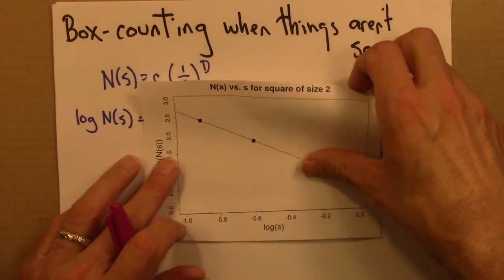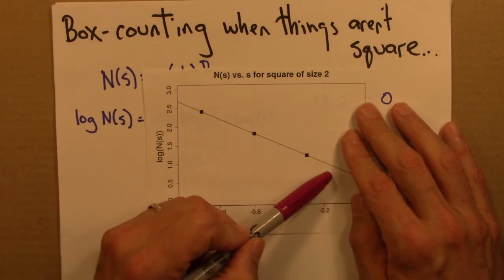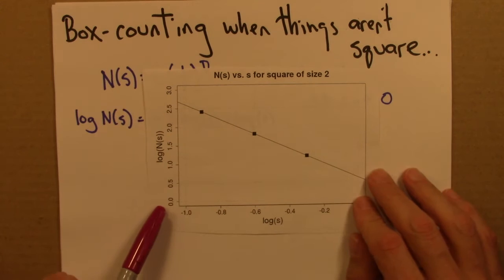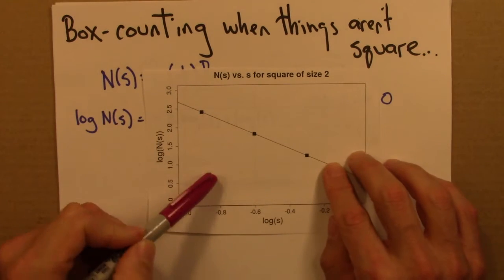So we did that for a square, and sure enough, we got a beautifully straight line. We could have plotted many more points, it would have been beautifully straight. And we can calculate the slope, and we get 2.